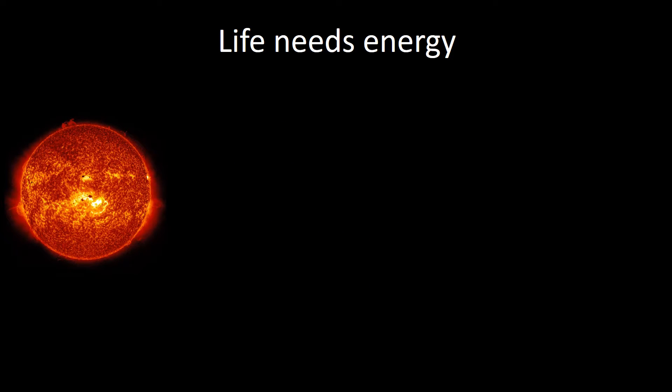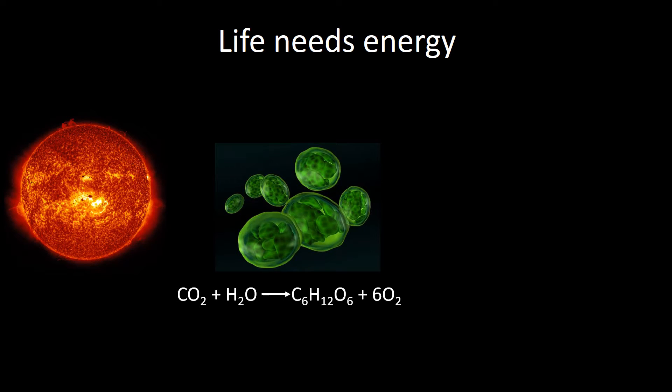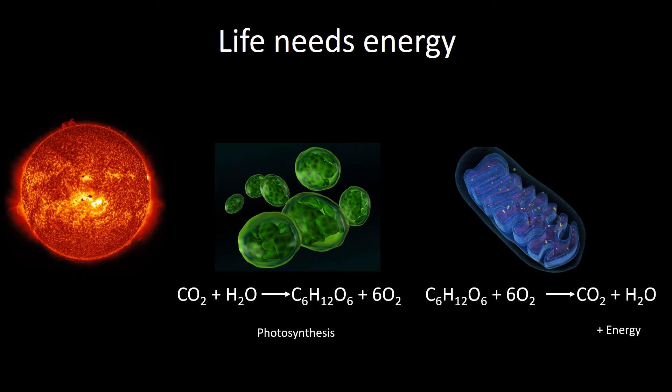We know that life needs energy, and almost all life on this planet gets its energy from the sun. And we can thank cyanobacteria for evolving the ability to do photosynthesis. They can take the energy in sunlight and store it in carbohydrates, and then animals like ourselves come along and eat plants or other animals, and we harvest the energy and other organic molecules through a process called cellular respiration.